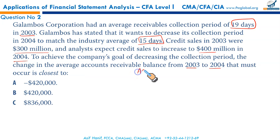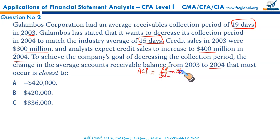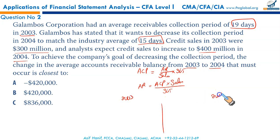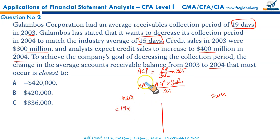First, write down the formula: Average Collection Period = (Average Accounts Receivable / Net Credit Sales) × 365. Rearranging to make accounts receivable the subject: Accounts Receivable = (Average Collection Period × Sales) / 365. Applying this for 2003: AR = (19 × 300 million) / 365.